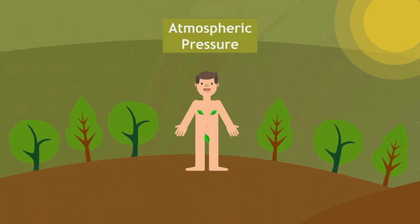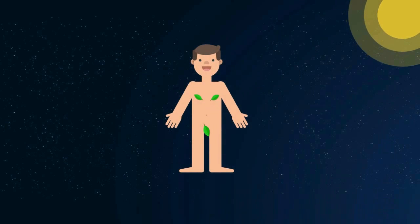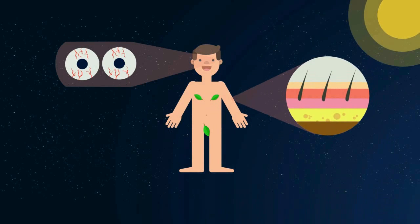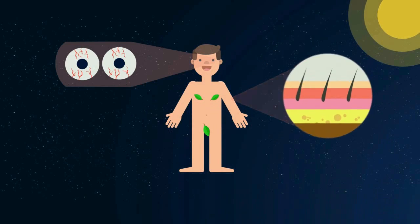Firstly, on earth the atmospheric pressure is constantly acting on us. Humans have evolved in adaptation to this. In outer space without the atmospheric pressure acting on us, the internal body pressure would try to make our body explode. However, the human skin is strong enough to withstand this force and keep you intact.